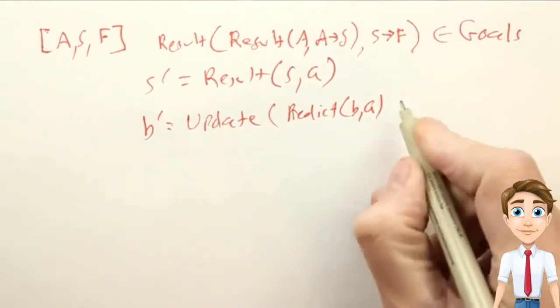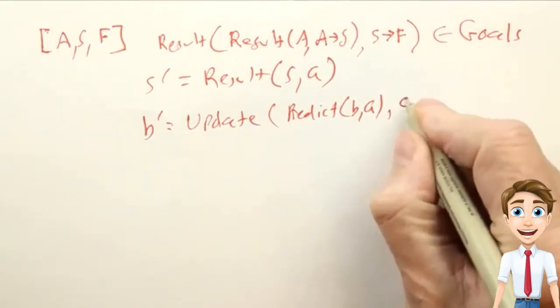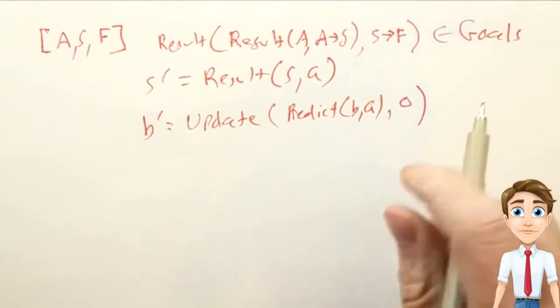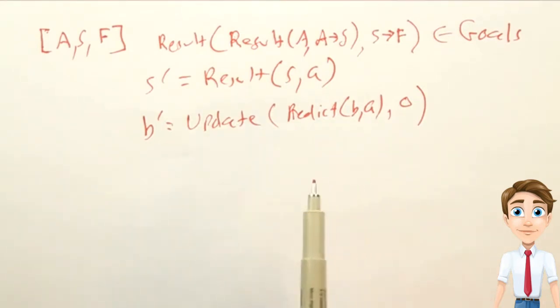And then updating it based on our observation O of the world. So the prediction step is when we start off in a belief state, we look at the action, we look at each possible result of the action, because they're stochastic.